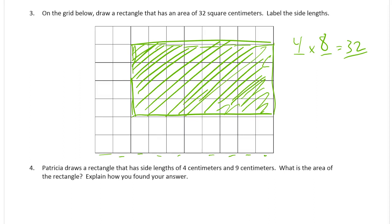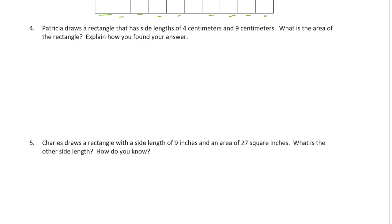And label the side lengths. This would be 4 centimeters and this one would be 8 centimeters, since the area inside is 32 square centimeters. Patricia draws a rectangle that has side lengths of 4 centimeters and 9 centimeters. What is the area of the rectangle?